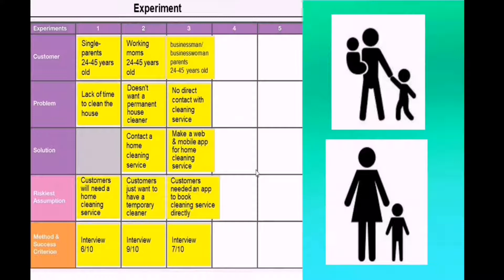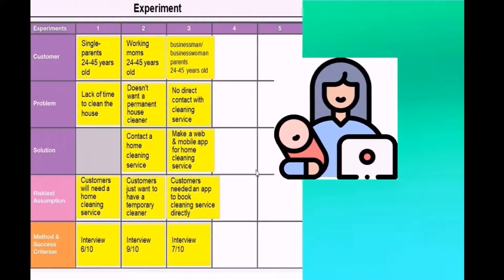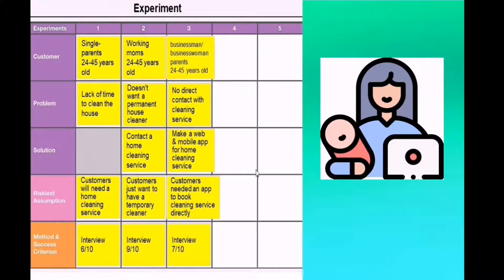The second customer in the experiment is working moms, ages 24 to 45 years old. The problem is they don't want a permanent house cleaner. The solution is to contact a home cleaning service. The riskiest assumption is that customers just want a temporary cleaner. The method is an interview with a success criterion of 9 out of 10.